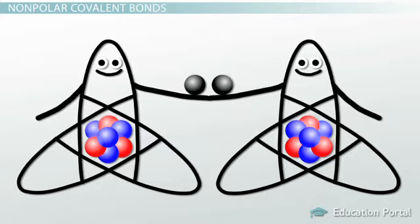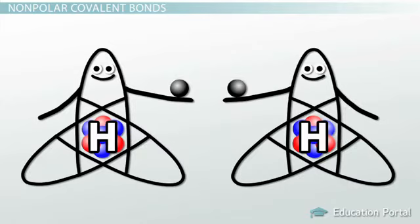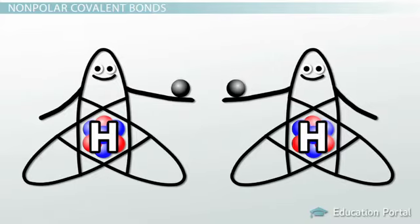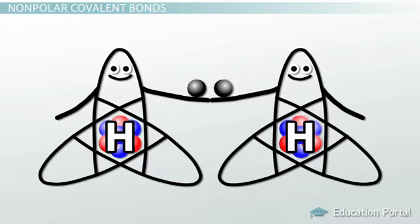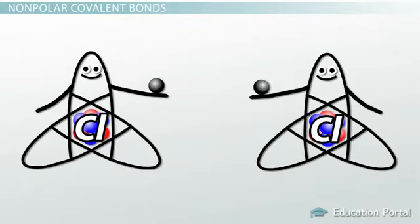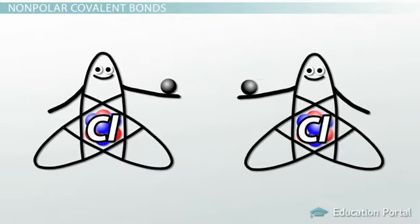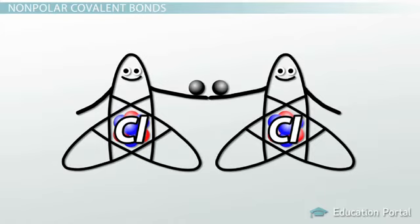Like children who share toys, atoms involved in a nonpolar covalent bond equally share electrons. An example of a nonpolar covalent bond is the bond between two hydrogen atoms, because they equally share the electrons. Another example is the bond between two chlorine atoms, because they also equally share the electrons.